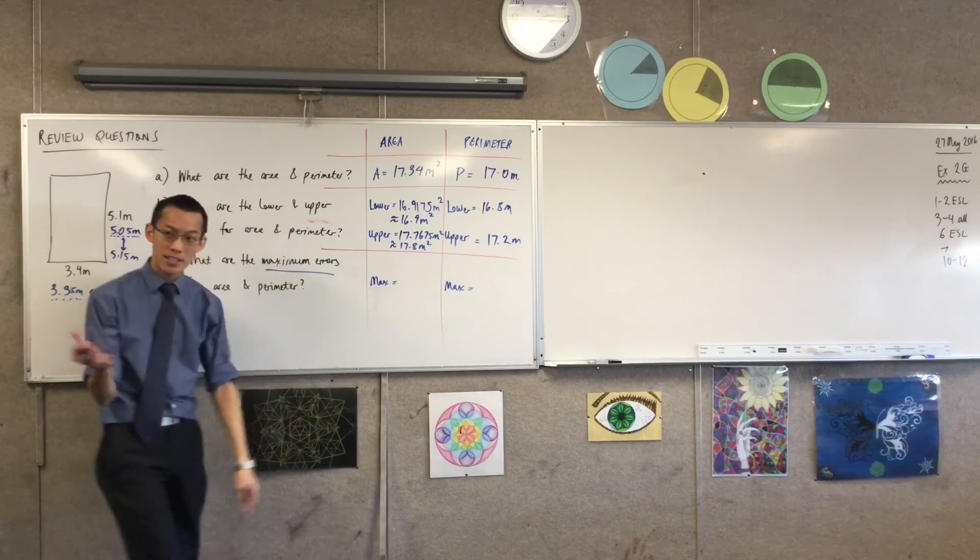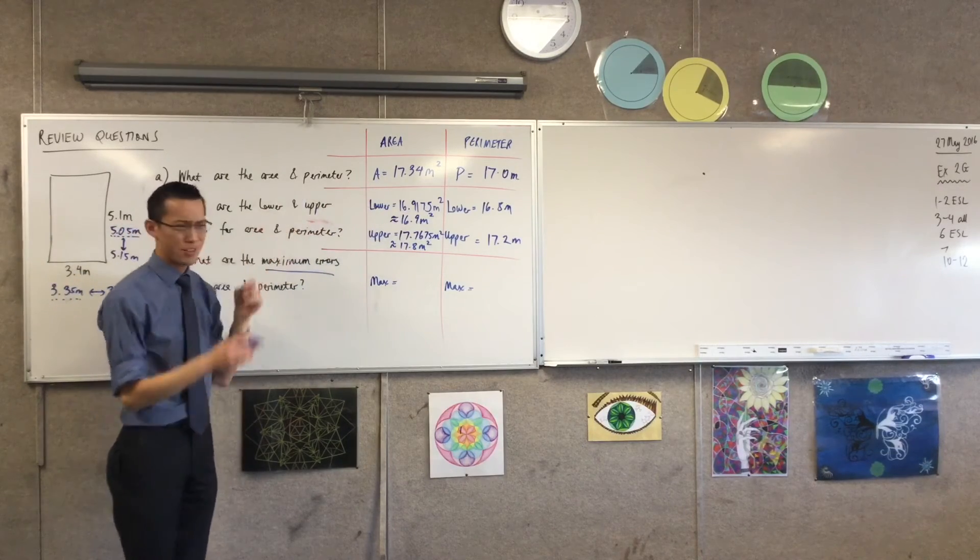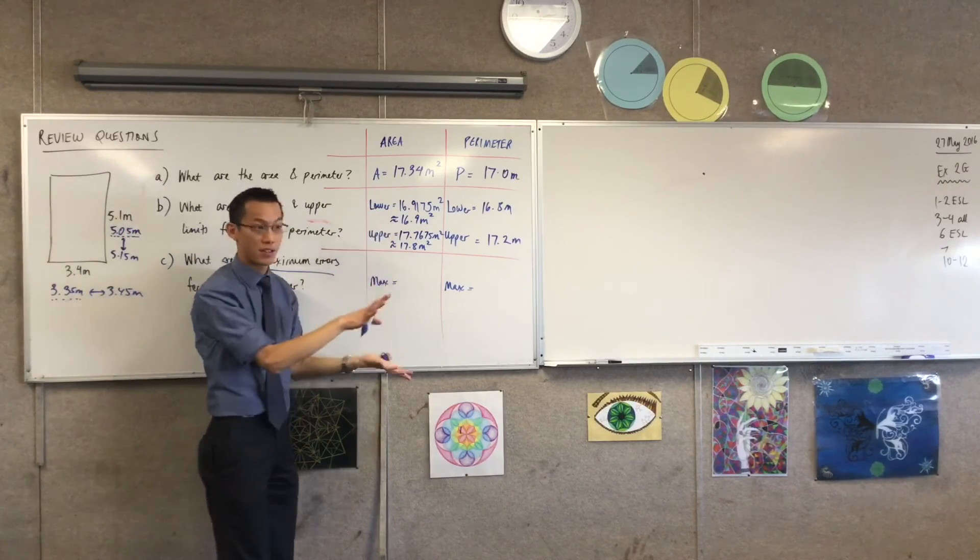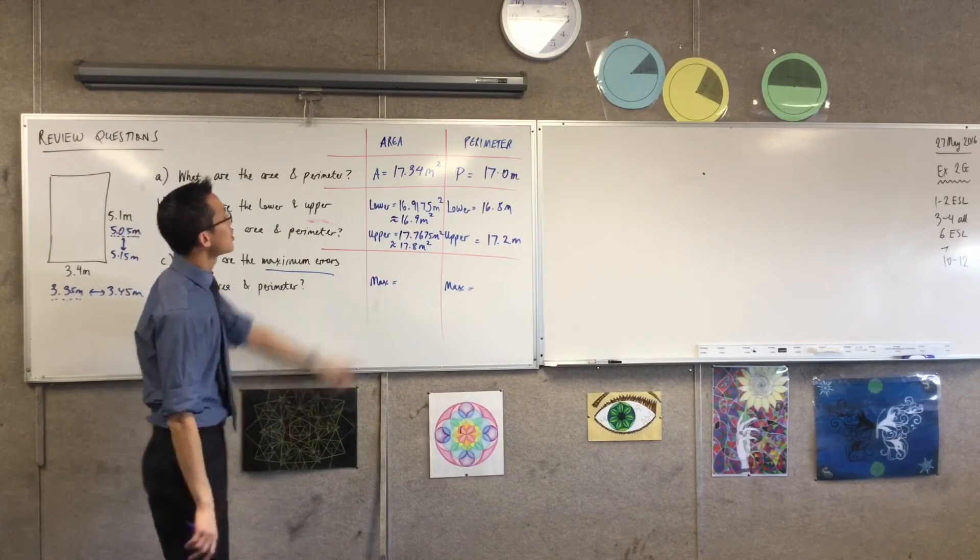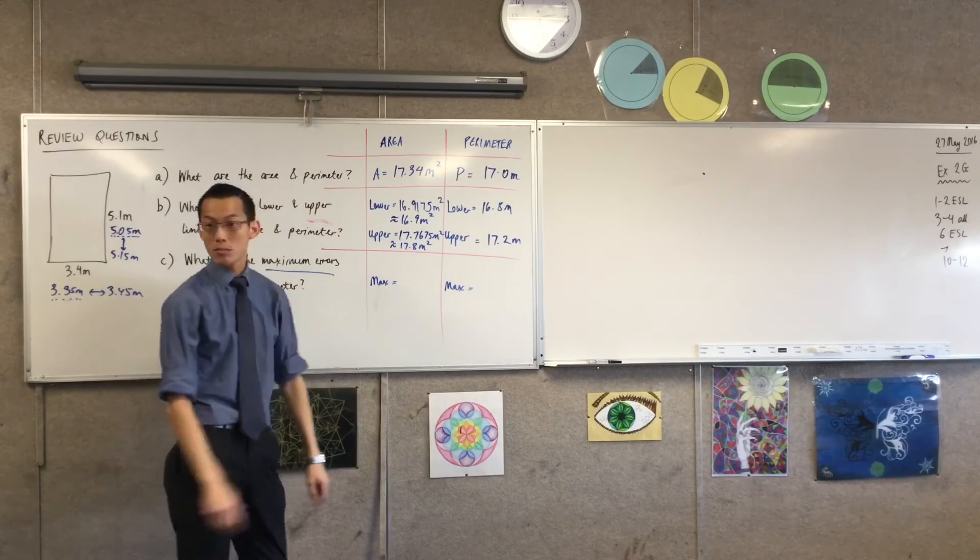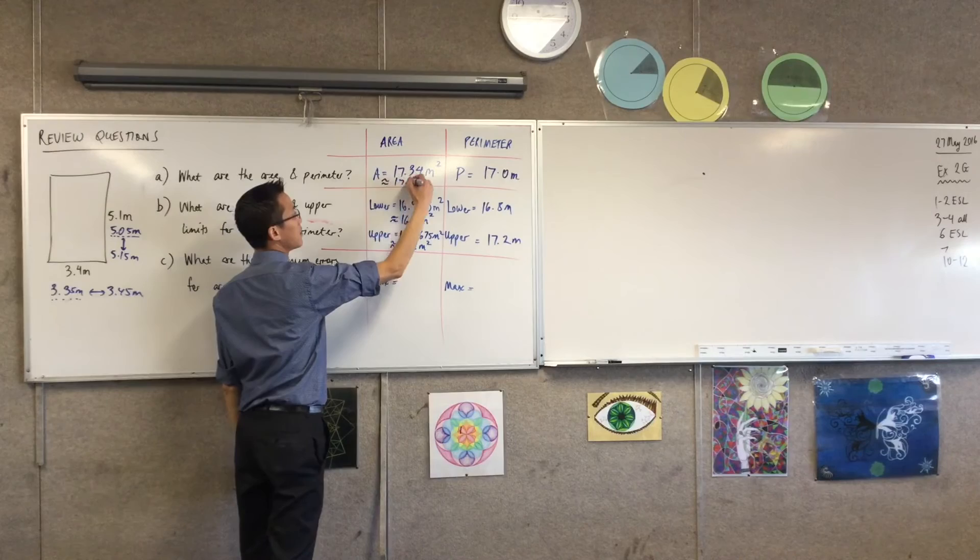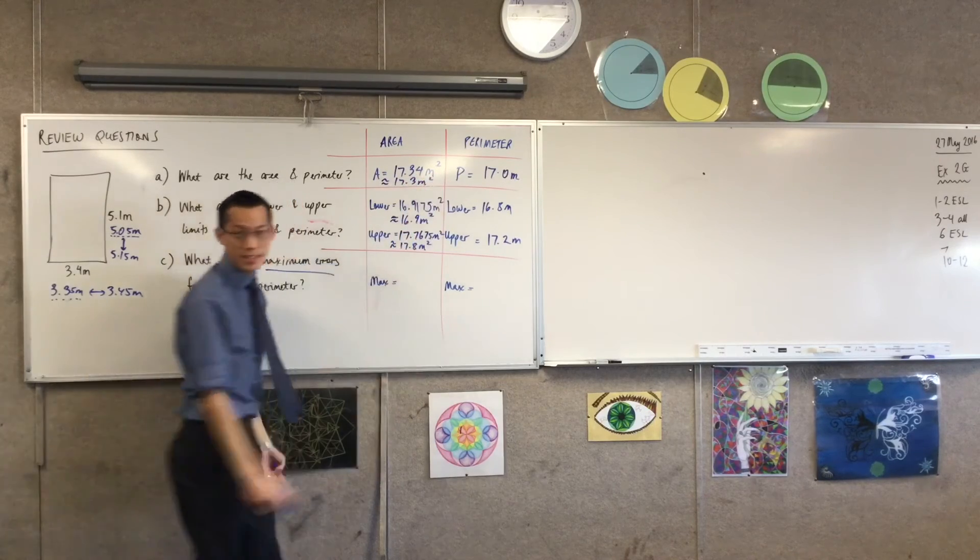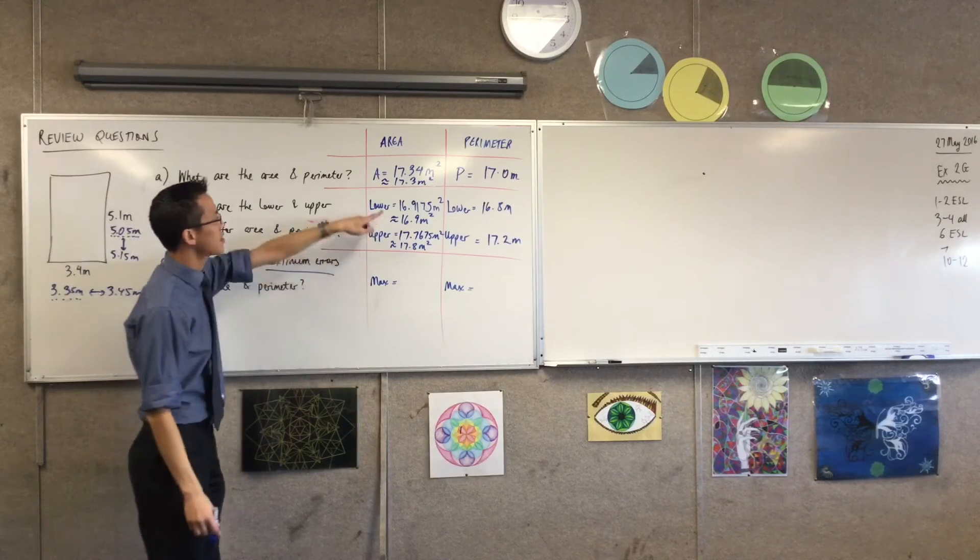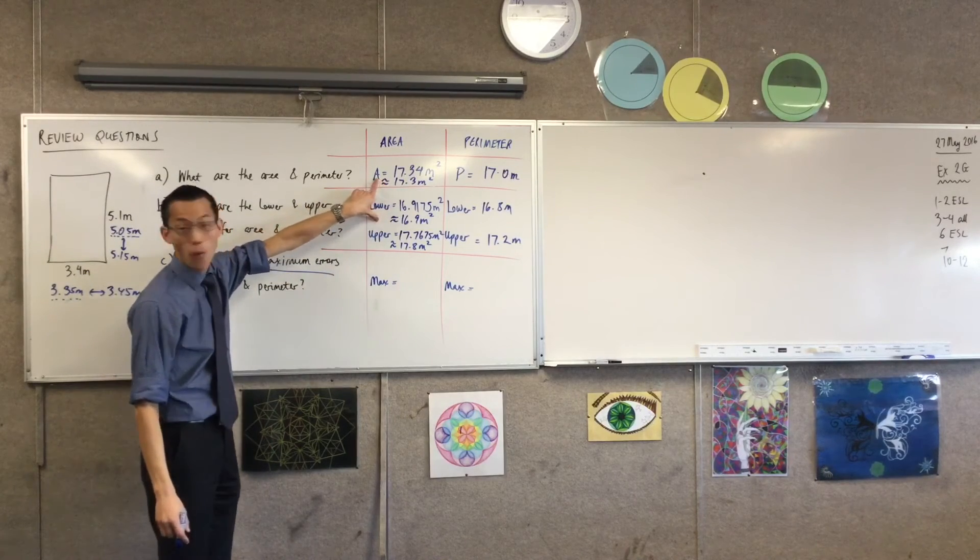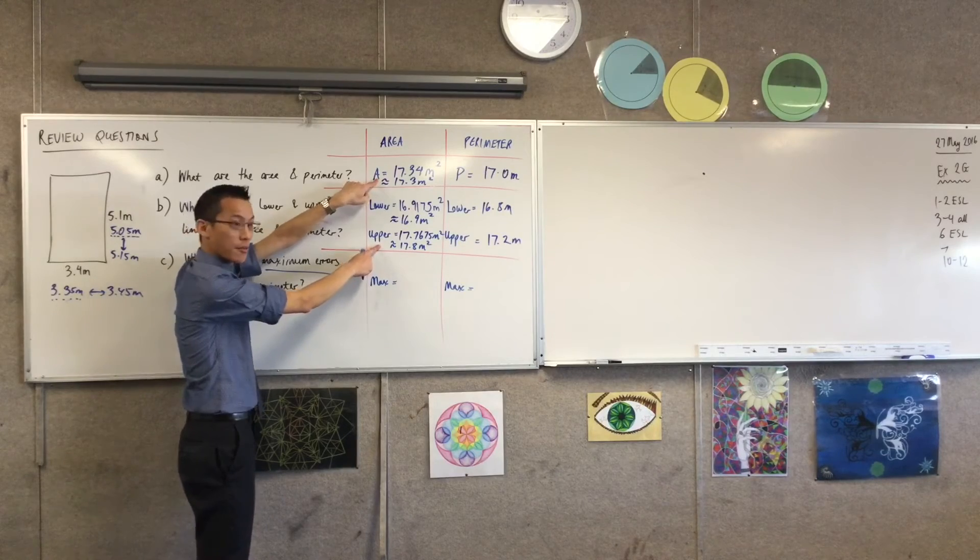So again, you'd have a valid answer there based on what you've written before. I'm just going to write it based on what I've rounded to because it's sort of consistent with my own answer. Do I round the area? Yeah, there's no reason why I couldn't. So 17.3 because, again, it's the same level of accuracy that I have over here. So when you think about this, what's the difference now? This is 0.4 difference and this is 0.5, isn't it? Half a meter squared.